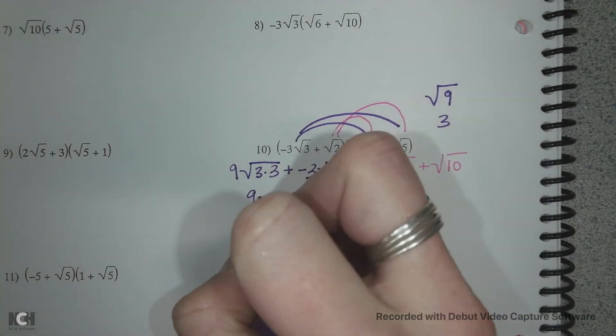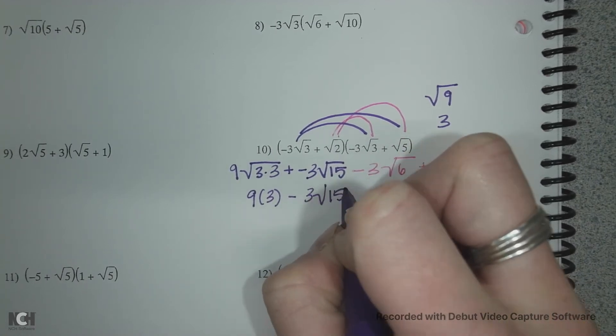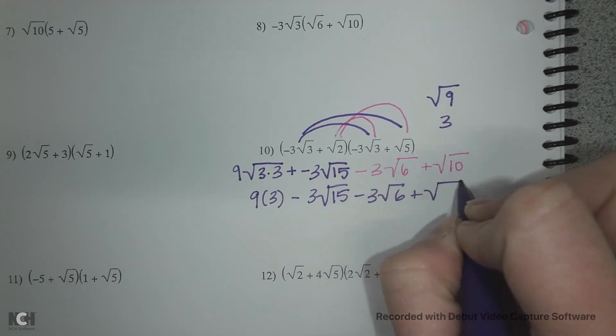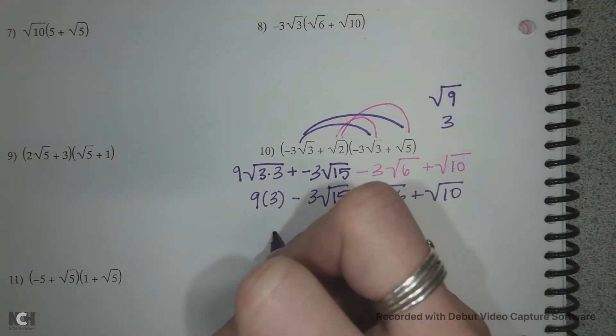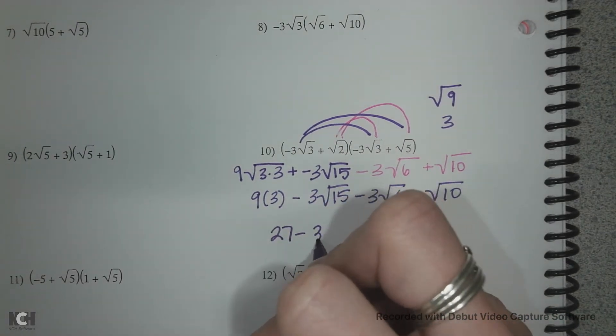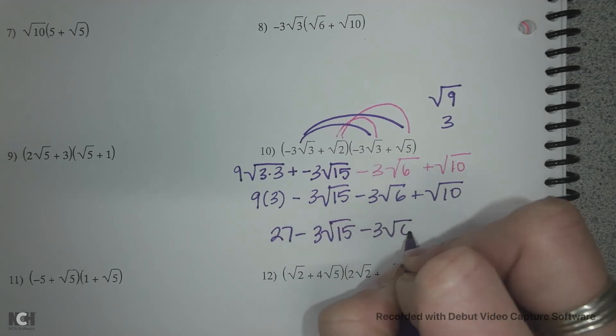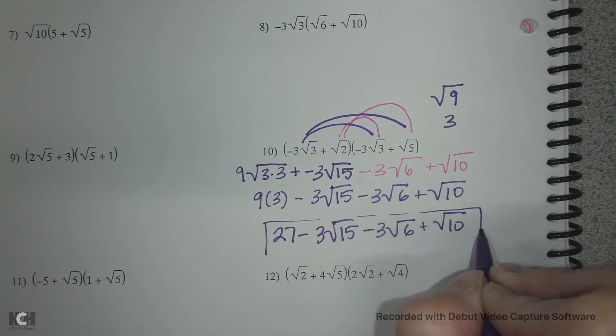So it'll be 9 times 3 minus 3 root 15 minus 3 root 6 and root 10. These can't be reduced, your radicals. So we're just going to multiply 9 times 3 and get 27 minus 3 root 15 minus 3 root 6 plus root 10. And there we go, that's our final answer. We can't simplify any further and we've multiplied through.